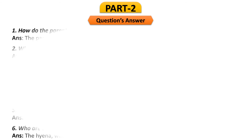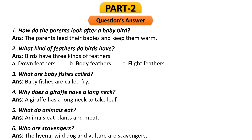Now we will learn the question answers. Question 1: How do parents look after a baby bird? The parents feed their babies and keep them warm — they collect food from outside and feed it with their mouths, keeping babies under their feathers. Question 2: What kinds of feathers do birds have? Birds have three kinds: down feathers, body feathers, and flight feathers.